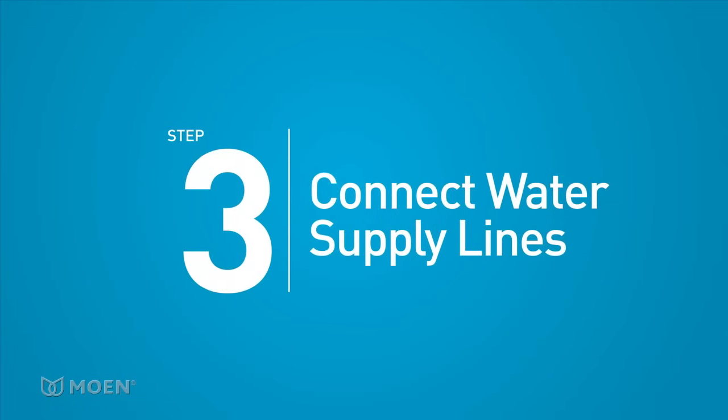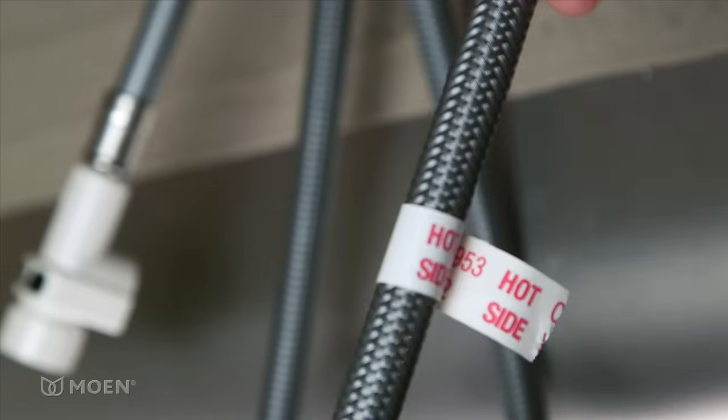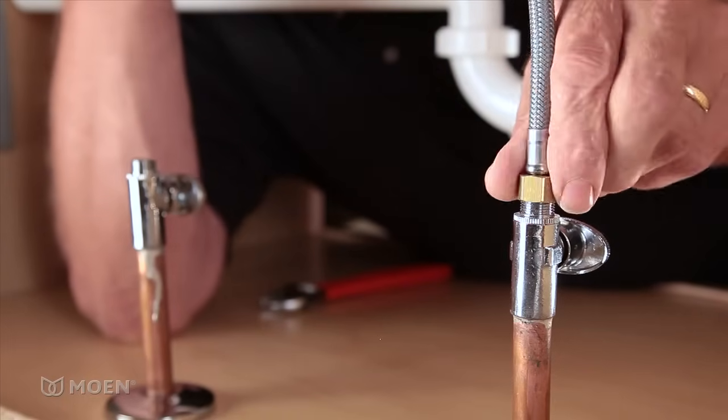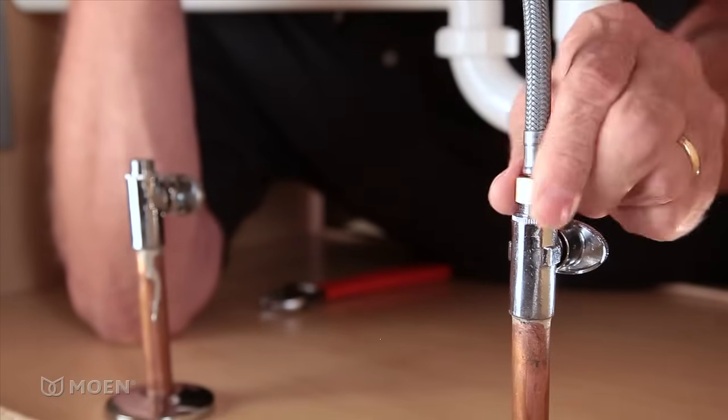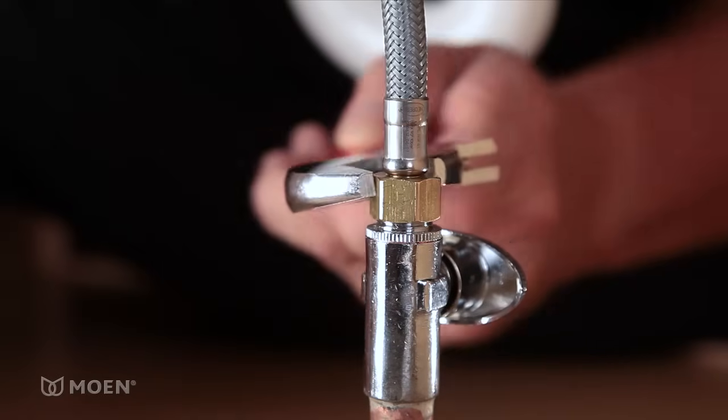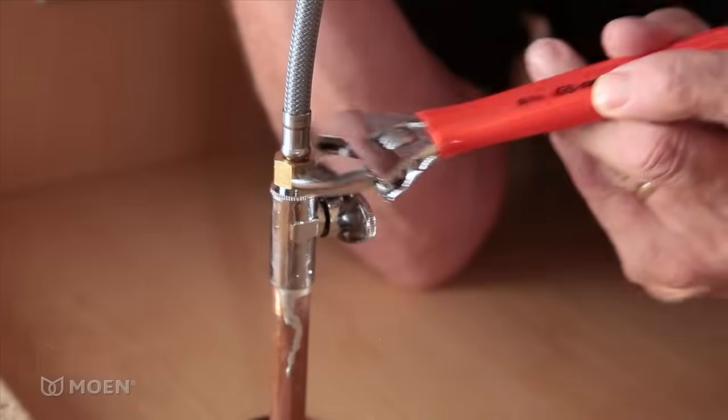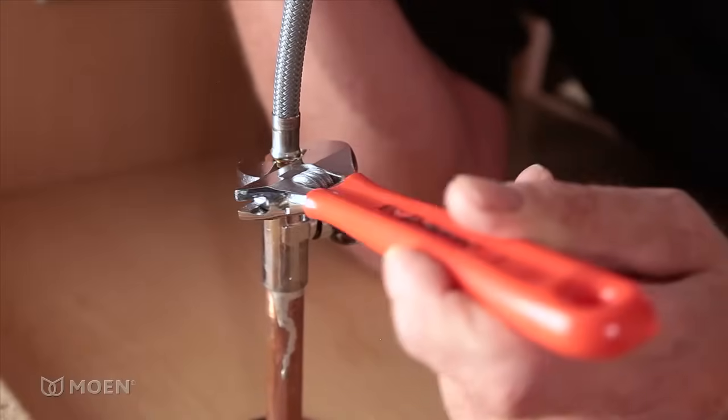Step 3. Connect the water supply lines. The hot supply line, which has a white tag, should be connected to the hot water inlet. Secure the connection with an adjustable wrench. You want the connection to be snug, but don't over tighten. Now, attach the cold side in the same way.